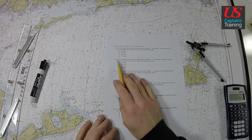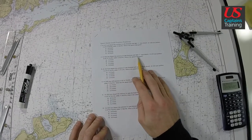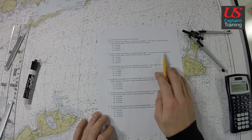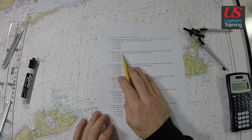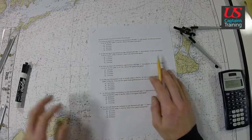Speed Made Good Practice Problem 2 says at 1014 you depart the entrance to Lake Montauk with light one close aboard. At 1222 your position is latitude 41.58, longitude 71.50.9. What is the Speed Made Good?